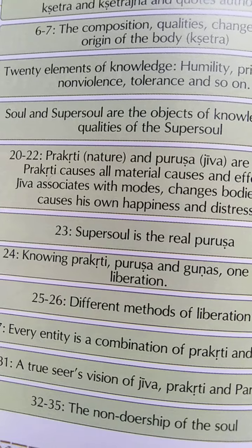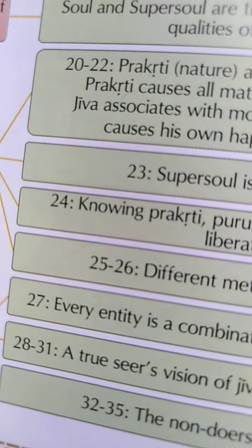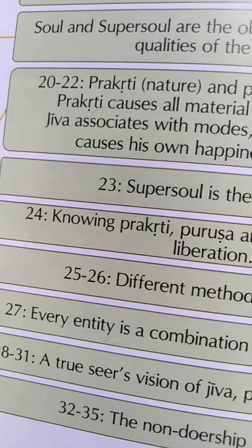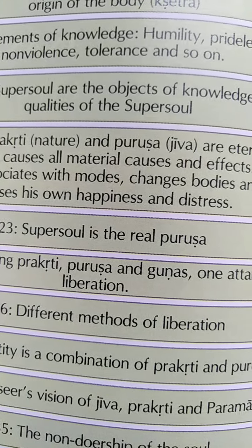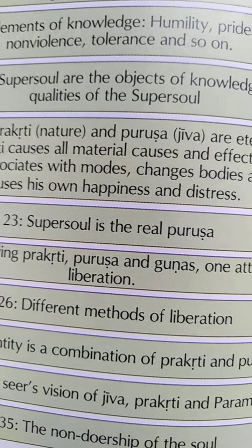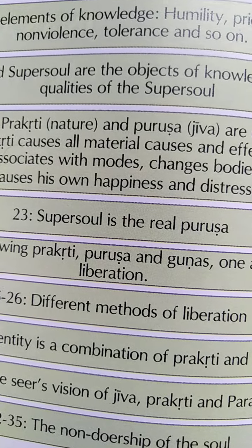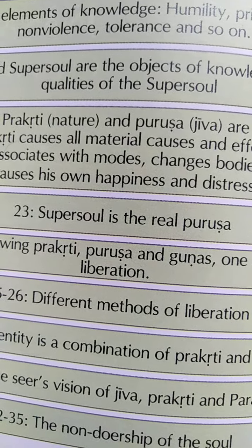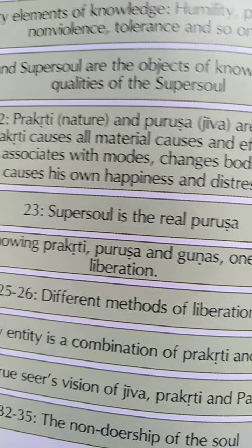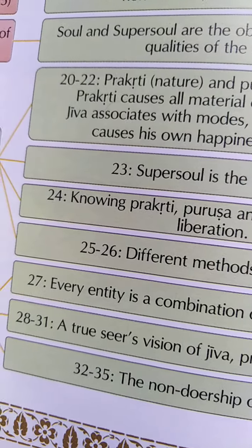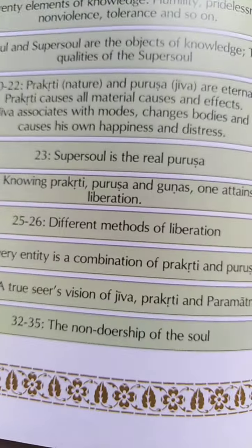In the twenty-third shloka, Krishna explains that the Supersoul is the real Purusha. In the twenty-fourth shloka, Krishna says that by knowing Prakriti, Purusha and the Gunas, one can attain liberation. Even after knowing these three things, there are various methods for attaining liberation, which are described in the twenty-fifth and twenty-sixth shlokas — different methods of liberation.